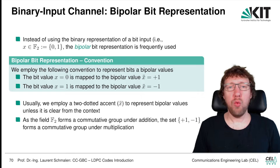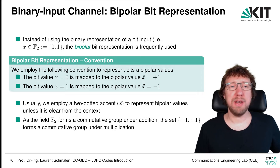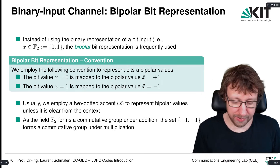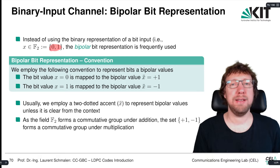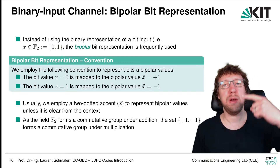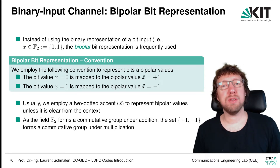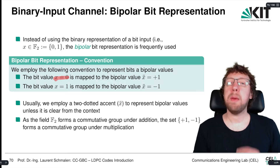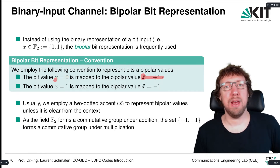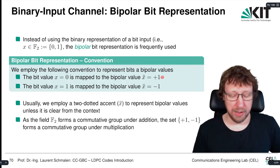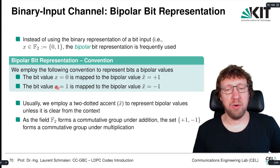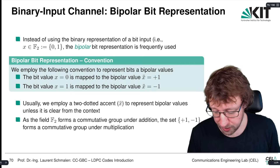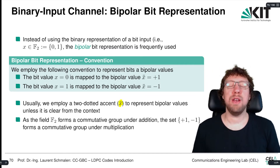What is the bipolar bit representation? We have already encountered it. The bipolar bit representation is closely related to the input of the binary input AWGN channel. Instead of using the bits 0 and 1 as an input to the channel, we use the convention that we transmit plus 1 or minus 1. If we want to transmit a bit x equals 0, we map it to the bipolar value x-double-dot equal to plus 1. And if we want to transmit a binary 1, we map it to the bipolar value x-double-dot equals minus 1.